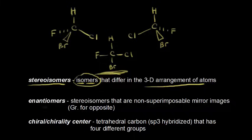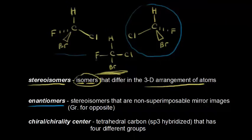Our next definition is enantiomers. Enantiomers are stereoisomers that are non-superimposable mirror images. We saw in the previous video that the molecule on the right is the mirror image of the one on the left, but when we tried to superimpose them we couldn't — so they're different molecules, and they are enantiomers of each other, which is Greek for 'opposite.'